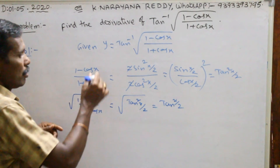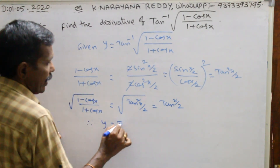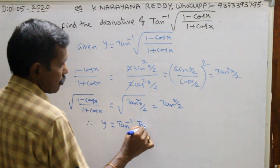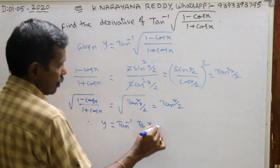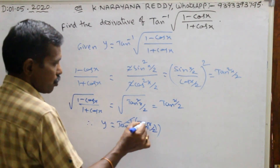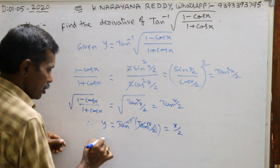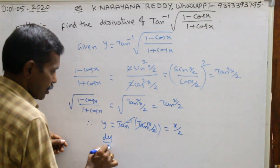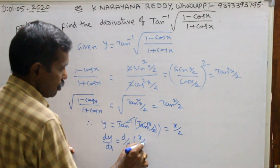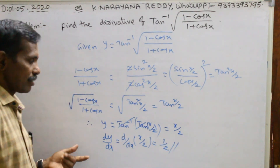Therefore, y equals to tan inverse of tan x by 2, which equals x by 2. Now, dy by dx equals to the derivative of x by 2 with respect to x, which is nothing but 1 by 2. This is the required answer.